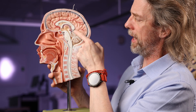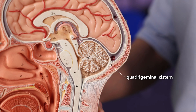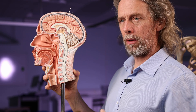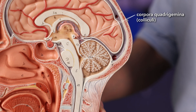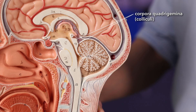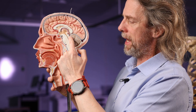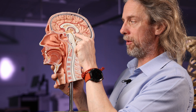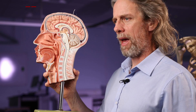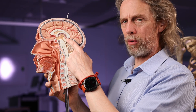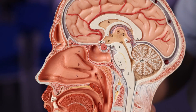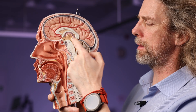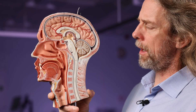On the other side, opposite the interpeduncular cistern, we have the quadrigeminal cistern. On the posterior midbrain we have the colliculi — little hills — the four colliculi, called the corpora quadrigemina, meaning the four twinned bodies. There's a space there — that's the quadrigeminal cistern, which is inferior to the splenium of the corpus callosum, superior to the cerebellum, and posterior to the midbrain. The lateral part often gets called the ambient cistern. In there we've got the great cerebral vein of Galen, the pineal gland, the trochlear nerve, and the superior cerebellar and posterior cerebral arteries running nearby.